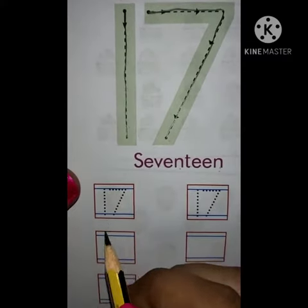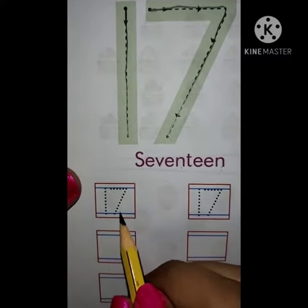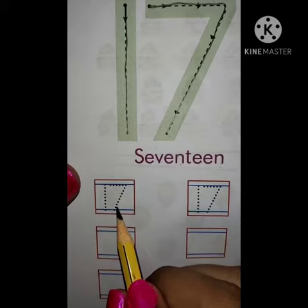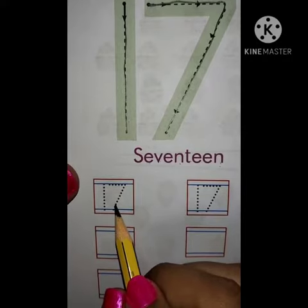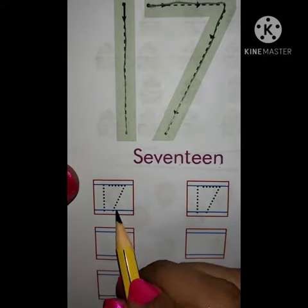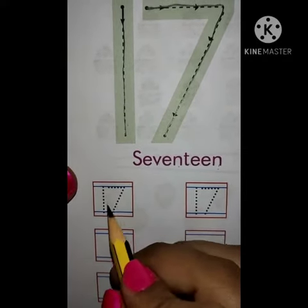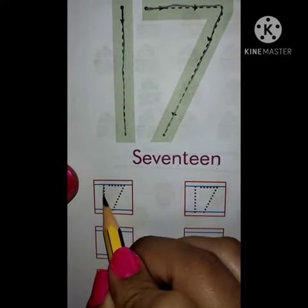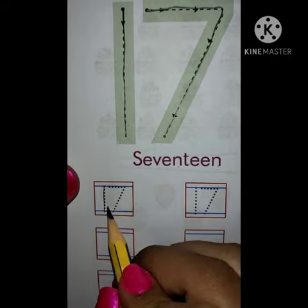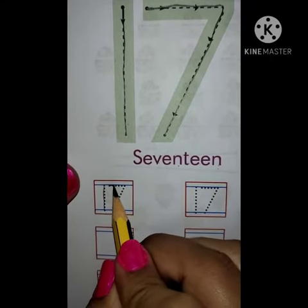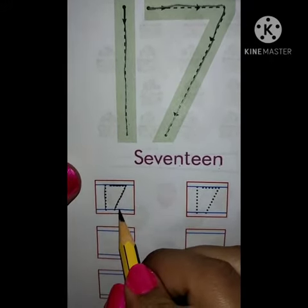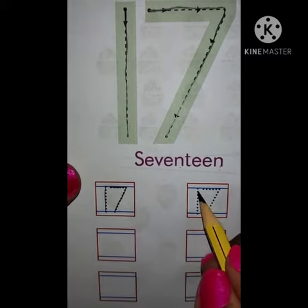Now, we will write 17 with tracing in a box. So, let's start. First, 1. Then, 7. 1, 7, 17.